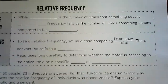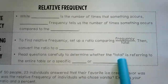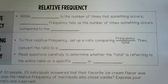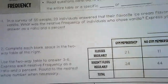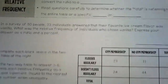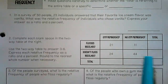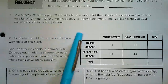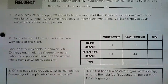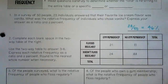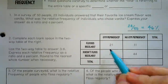One thing to be careful about: sometimes the total isn't referring to every person surveyed — it might just be a specific row or column, which is a specific category. So read the question carefully. First up: 50 people were surveyed about their favorite ice cream and 23 said it was vanilla. Find the relative frequency: 23 out of 50, which makes 46%. That one's pretty easy.